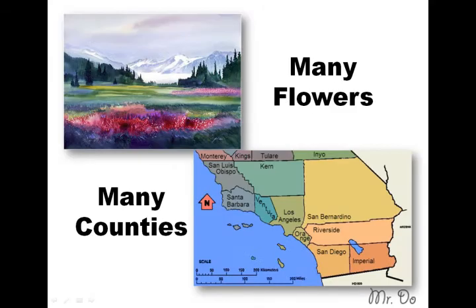Chloroplasts. On the left we have a field of flowers, and on the right we have Southern California, which has many counties. So inside a field of flowers, many flowers make up the field — just like Southern California, where many counties make up Southern California.